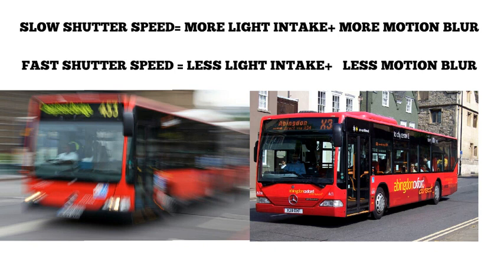When the shutter is open longer, the image becomes bright. When the shutter speed is fast — something like 1/8 of a second or 1/25 of a second — the shutter opens and closes quickly. In dark light, the image may not be as bright, but the motion blur is going to be controlled.